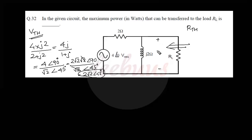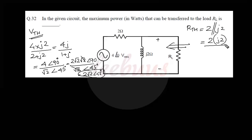Now evaluating Thevenin resistance R_th: deactivate the voltage source (short-circuit it). R_th = 2 ∥ j2 = (2 × j2) / (2 + 2j) = 4j / (2 + 2j) = 1 + j. So the Thevenin impedance is Z_th = 1 + j.